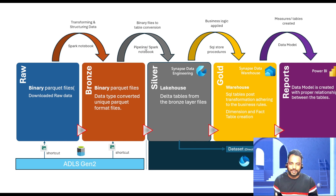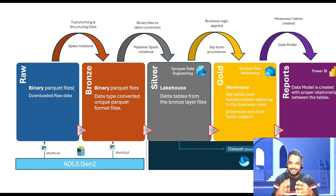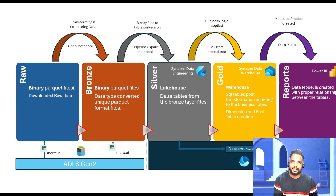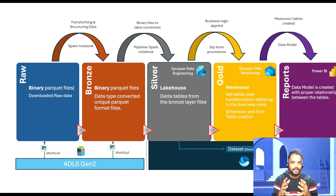We are going to use the ADF pipeline — it's the data factory pipeline integrated inside Microsoft Fabric — along with Spark notebooks. Using these two, we are going to take those Parquet files and convert them as delta tables. The data in the raw and bronze zones is kept in external ADLS Gen2. We have created shortcuts, mounting this ADLS Gen2 to these zones so that we can access this data from the compute in Fabric.